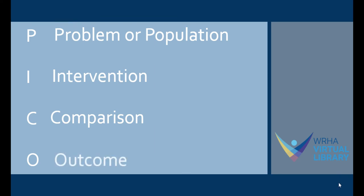O stands for outcome. This is what measures you are using to assess whether a particular intervention is good. It can be a positive outcome, such as reduced symptom burden, or you can also look at adverse effects as an outcome.